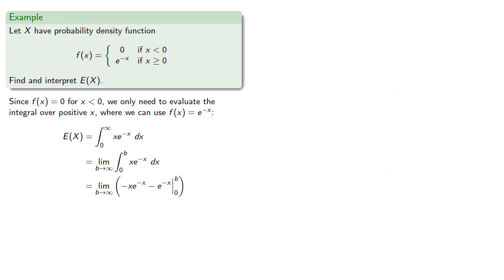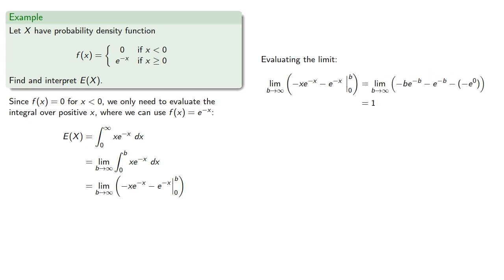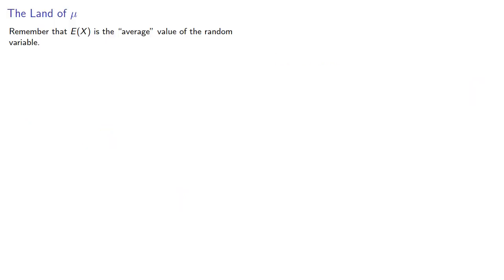We can now evaluate our limit, which gives us 1. So the average value of our random variable is 1. Remember, our interpretation is that the expectation is the average value of the random variable, and this means the mean value of our random variable is given by the expectation.